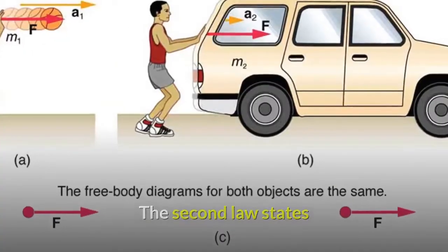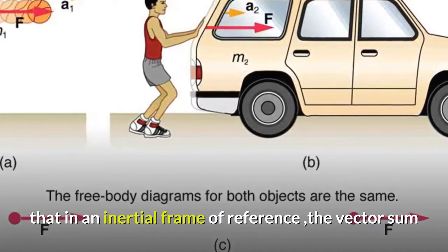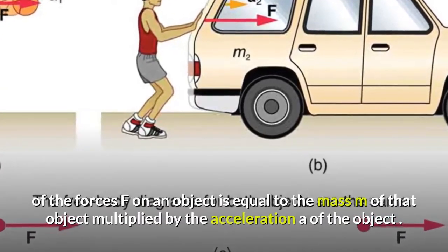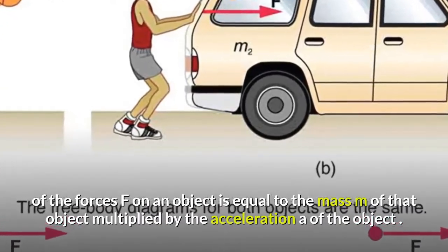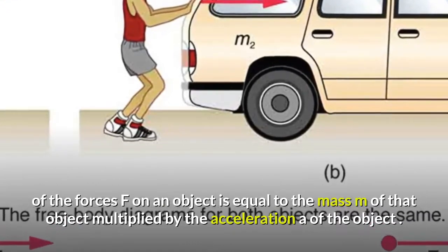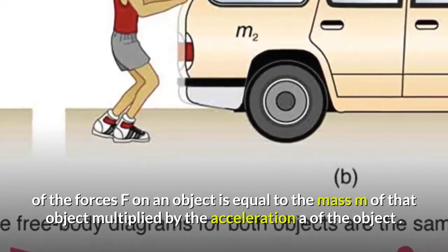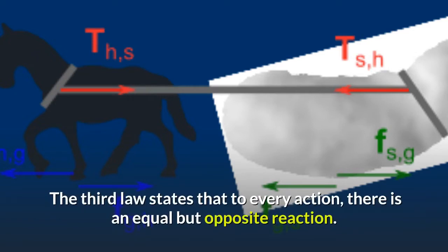The second law states that in an inertial frame of reference, the vector sum of the forces F on an object is equal to the mass M of that object multiplied by the acceleration of the object. The third law states that to every action, there is an equal but opposite reaction.